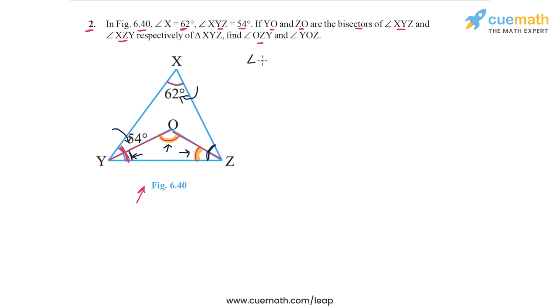So we have angle YXZ or the angle here, let me just write it as angle X plus the angle at Y, the full angle at Y, which is angle XYZ, plus the full angle at Z, which is angle XZY, this sum must be equal to 180 degrees. And this is because I am applying the angle sum property in triangle XYZ.